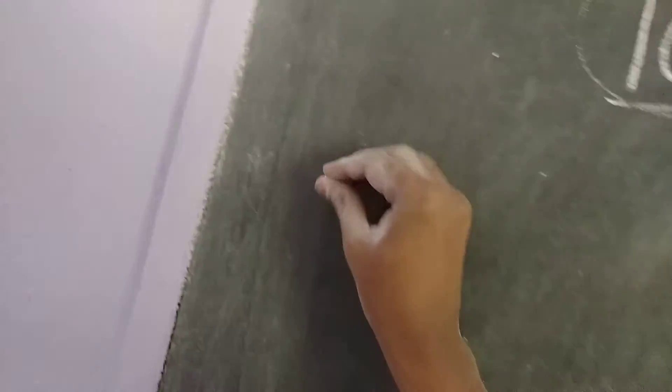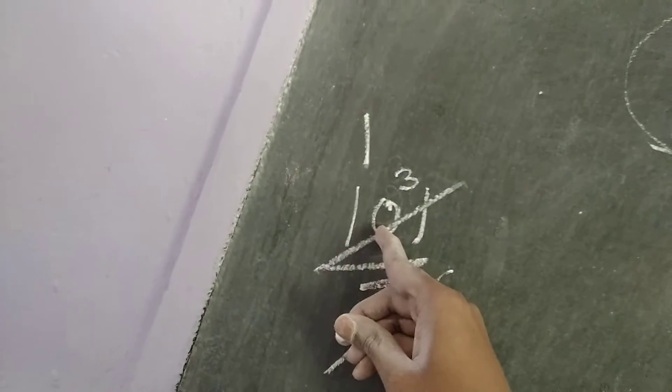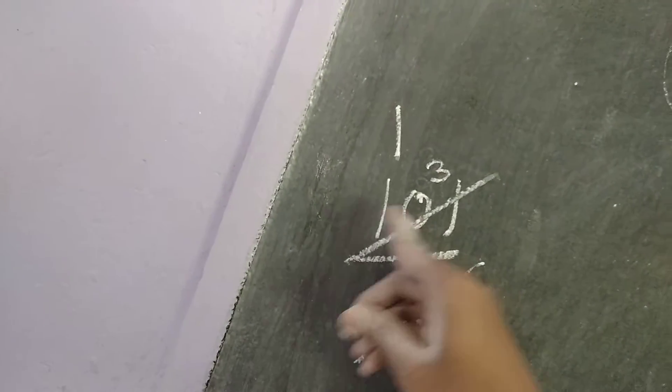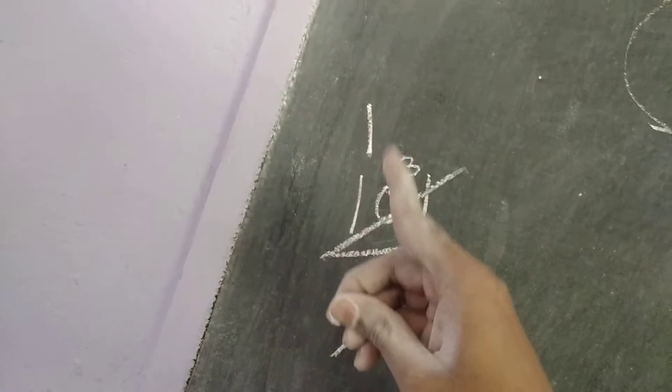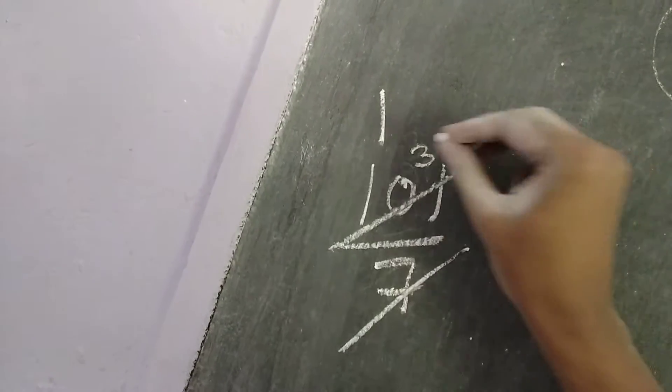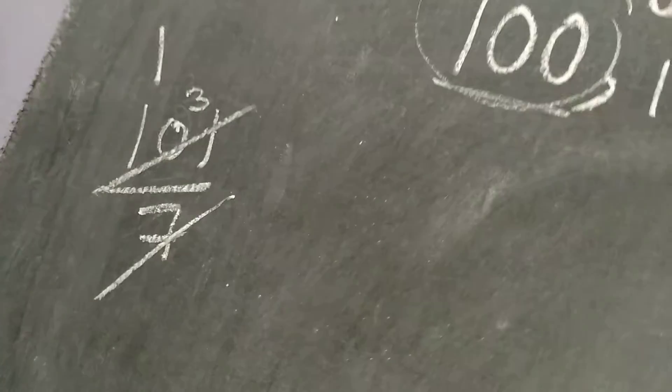Now let us check with 101. Divide 101 by 7 — 7 ones are 7, carry 3. 10 will not come; 9, 8, 7 will come. The difference between 10 and 7 is 3, so we get 31, and 31 will not come in the 7 tables. So 101 is not divisible by 7.